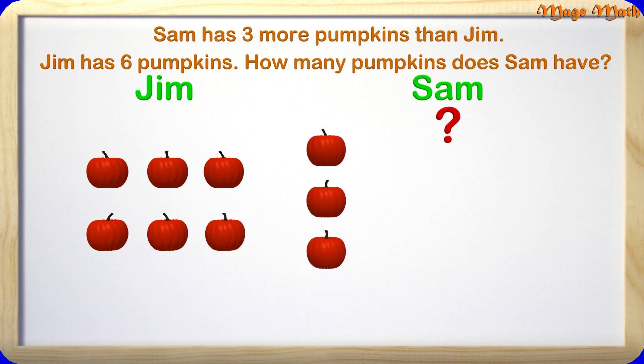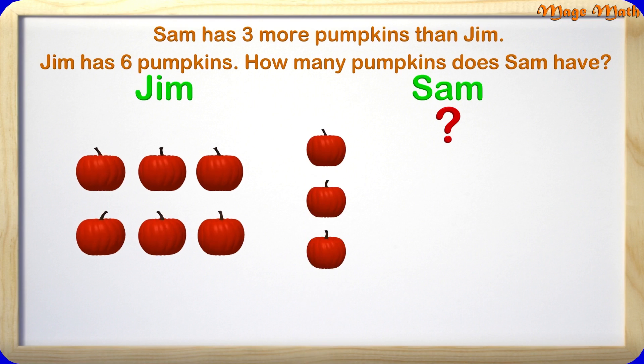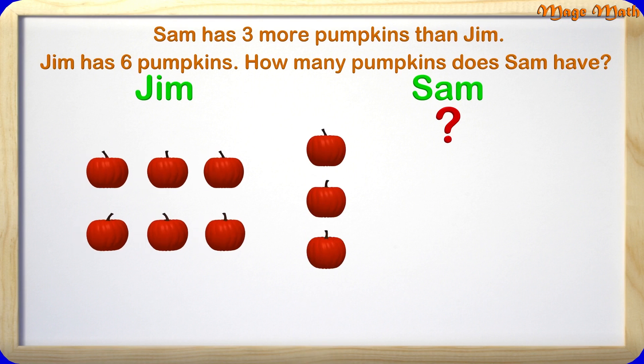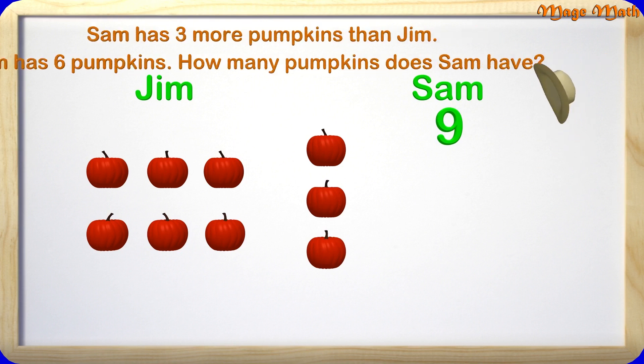Now we can count on from Jim's pumpkins. Jim had 6 and we count on from 6: 7, 8, 9. Sam has 9 pumpkins, which is 3 more than Jim does. Great job again! You guys are getting really good at this. Let's clear the board and do one last problem.